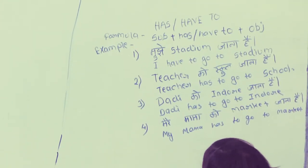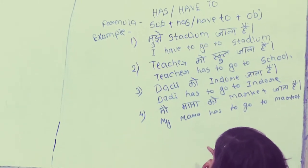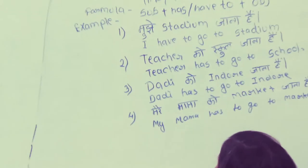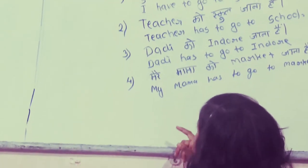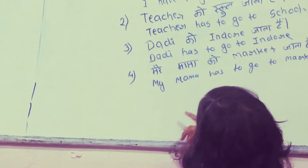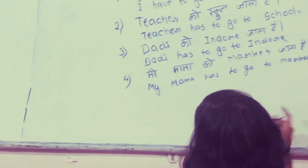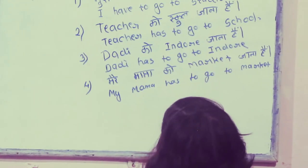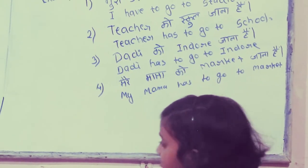Dadi ko indoor jana hai — Dadi has to go to indoor. Mere mama ko market jana hai — My mama has to go to market.